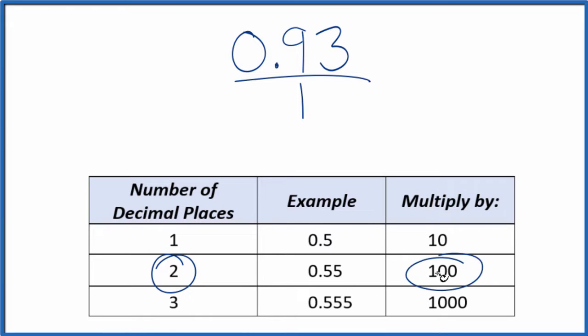We could multiply it by 100 and that would give us a whole number. So 100 times 0.93, that equals 93 and that's a whole number. We can't just multiply the numerator by 100, we have to multiply the denominator by 100 as well.